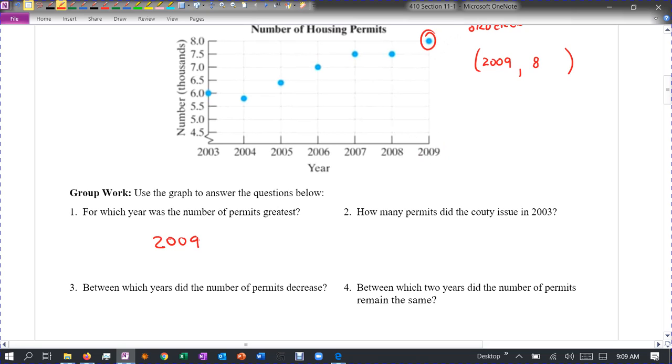How many permits did the county issue in 2003? So in 2003, come up, how many did they issue? 6,000. So it was six. Sorry. We need to put 6,000. Remember, it's measured in thousands.